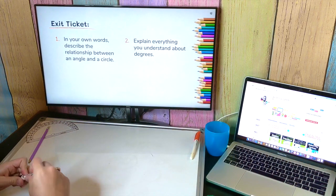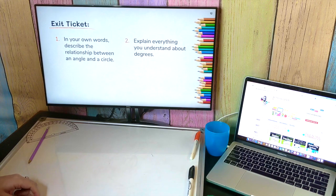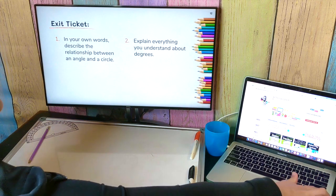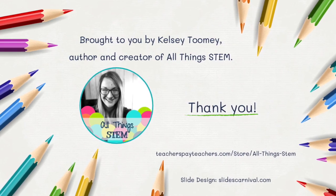All right, time for you to explain your learning. Your teacher will let you know how to submit the answers to these questions. But your exit ticket for this module is two different questions. Number one, in your own words, describe the relationship between an angle and a circle. Number two, explain everything you understand about degrees. So take some time, pause the video, think about your answers, and submit it to your teacher. Thanks for watching guys and happy learning.